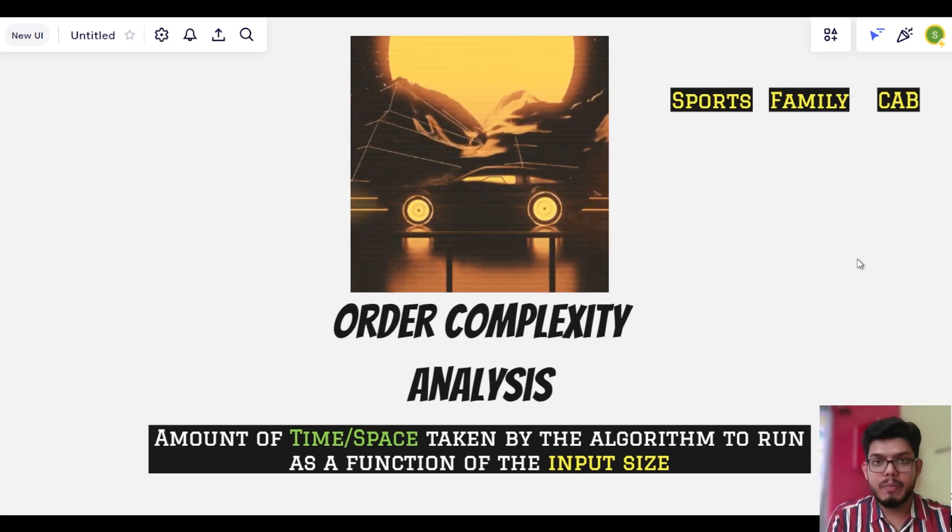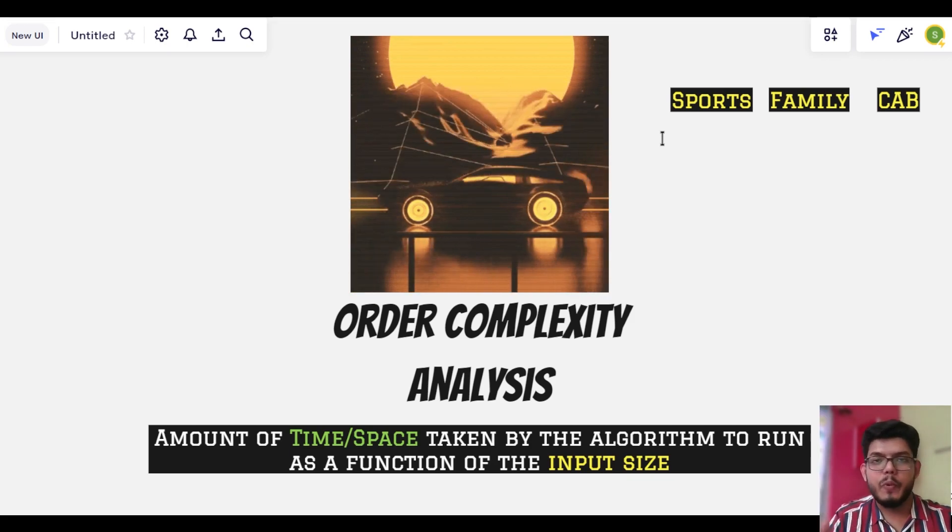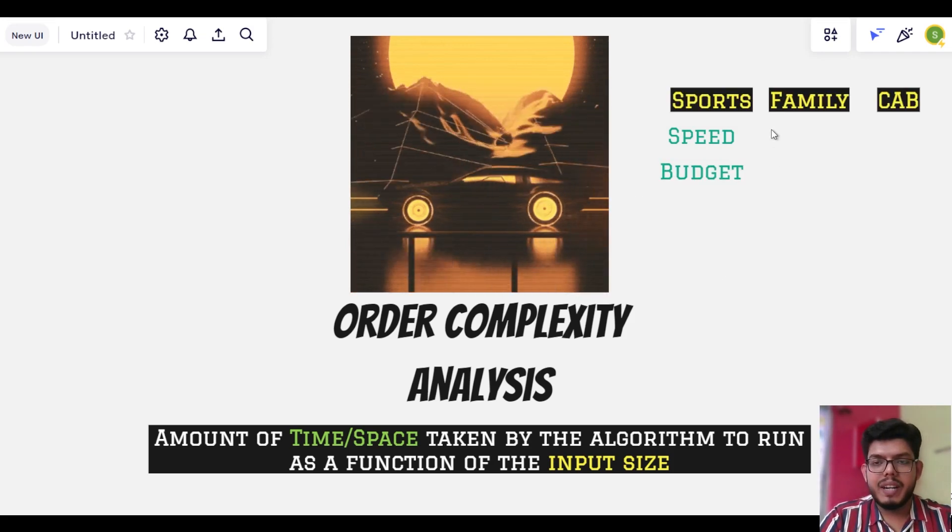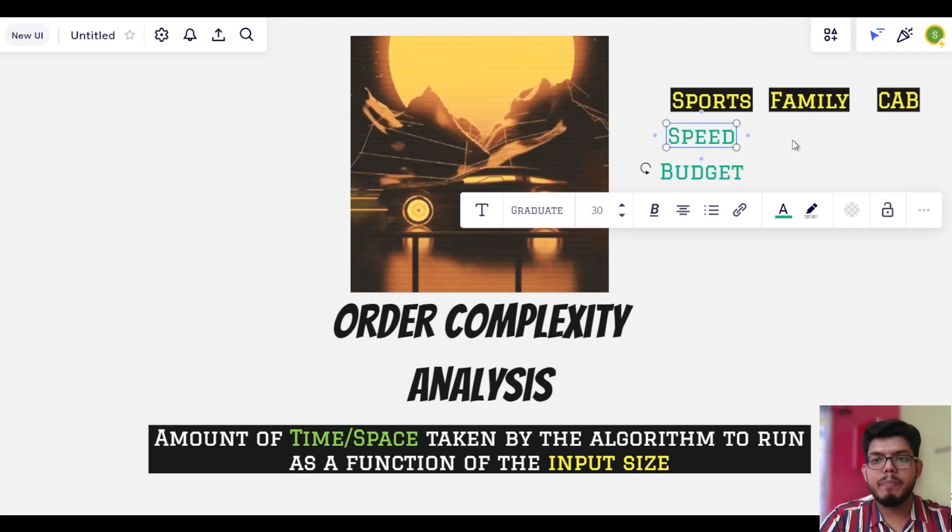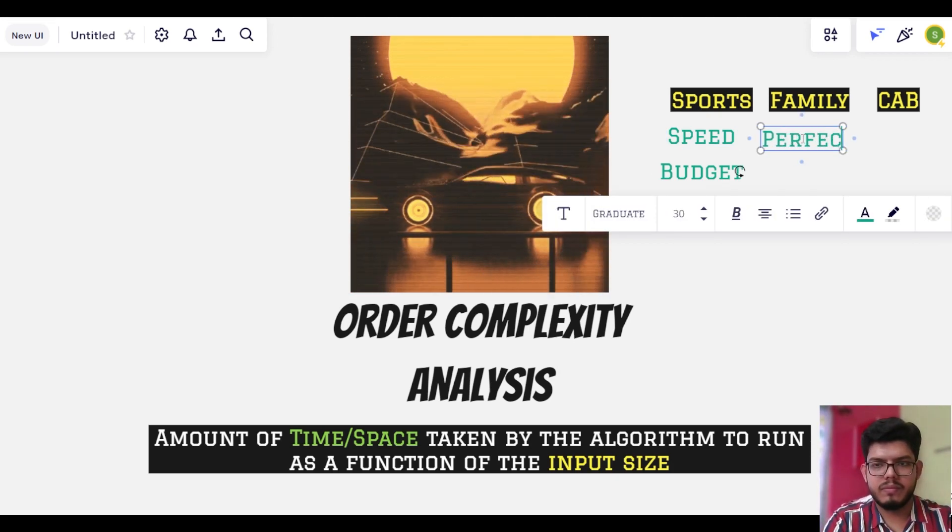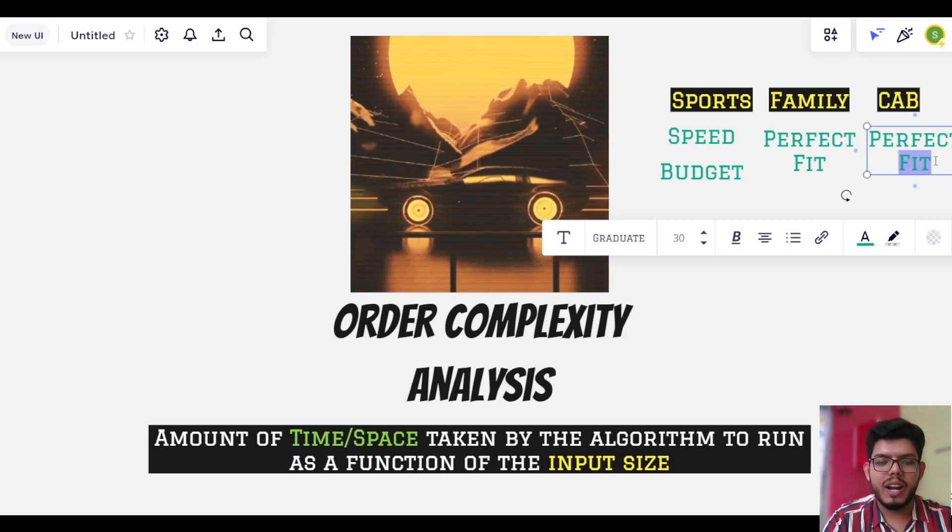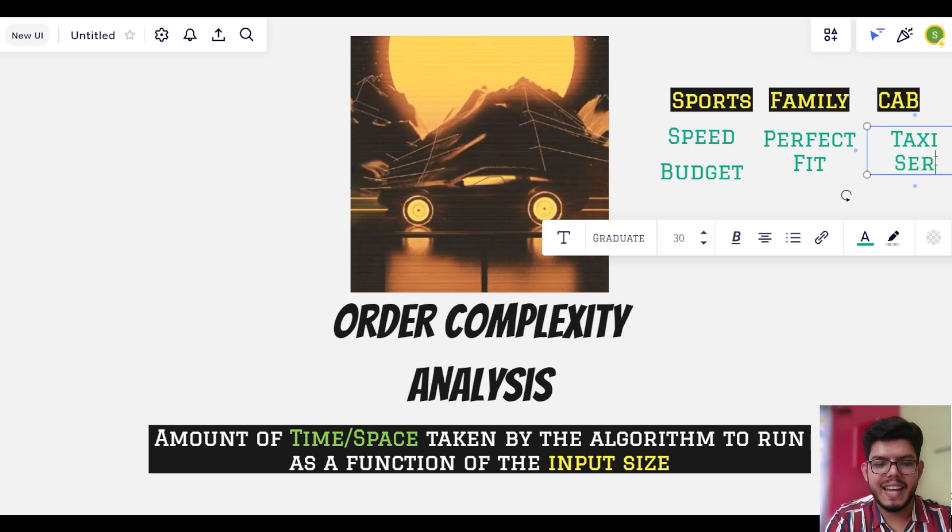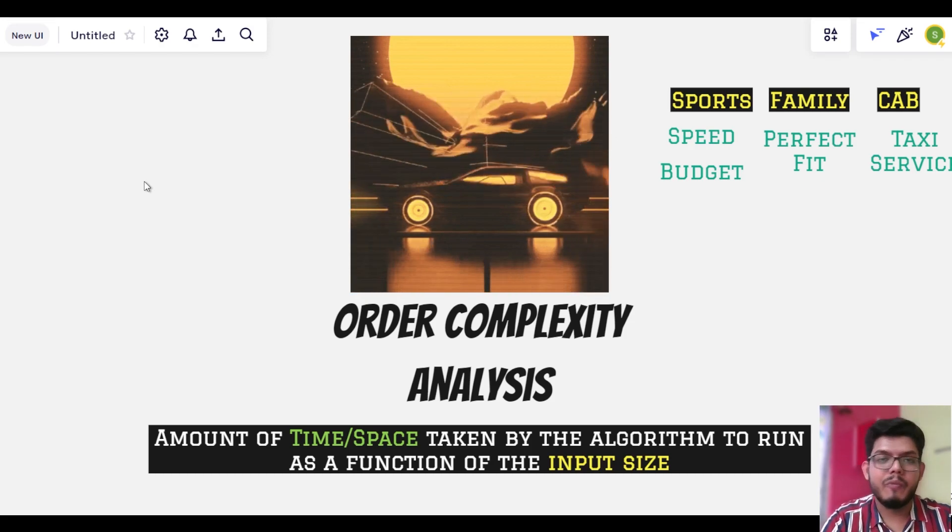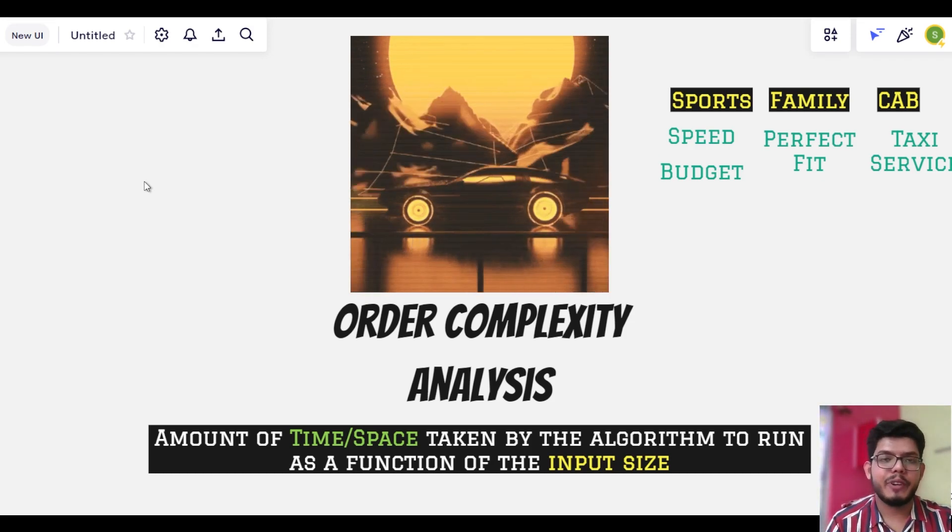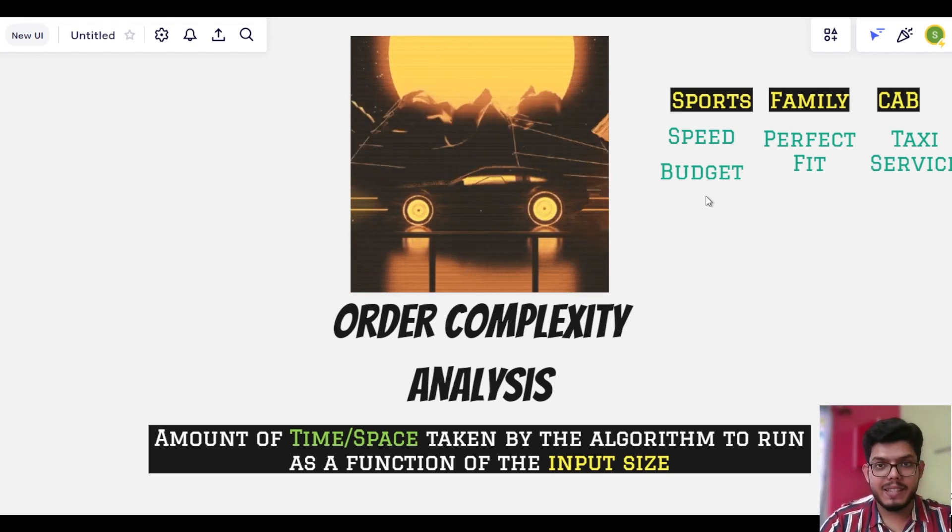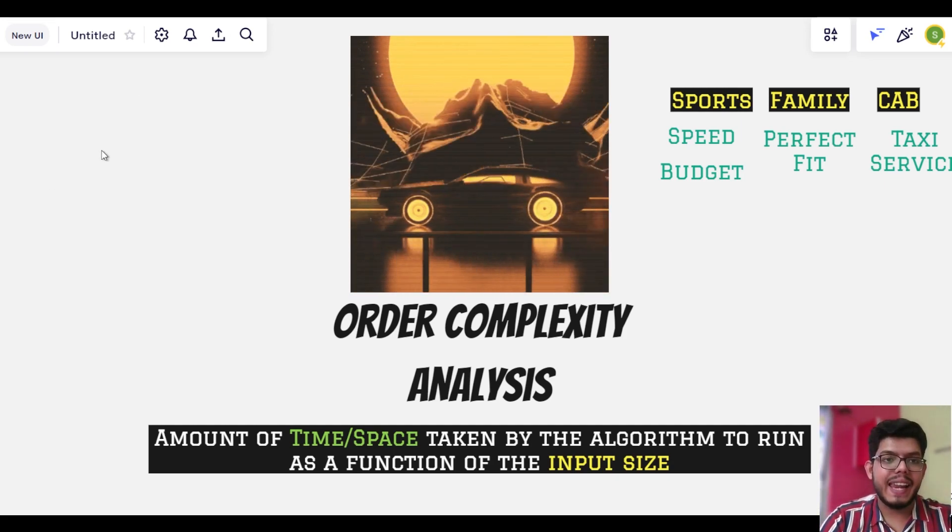We will compare them obviously based on our requirements. We know a sports car has a very high speed but it also needs a high budget. A family car might be the perfect fit for the use case. And the cab maybe I need it for a taxi driving service. Similarly we have different algorithms to solve a particular problem. We need to choose which algorithm is better for that particular problem. So how are we comparing these cars? We are comparing them based on the price.